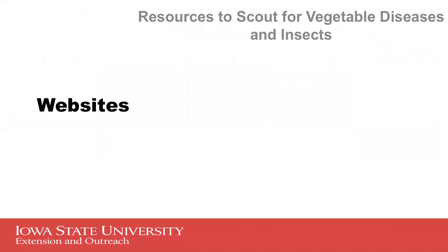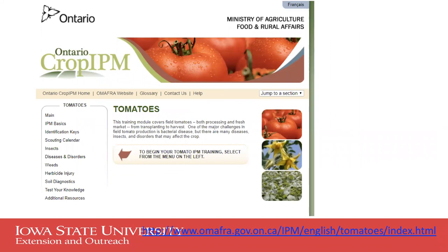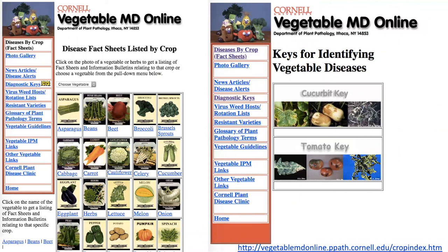When it comes to websites, my favorite is the Ontario Crop IPM site, which has a lot of great information on scouting, insects, and diseases. The scouting calendar doesn't quite apply for us — you could move the scouting a little earlier than they recommend — but the information on diseases, disorders, and insects by crop is spot on. There's also Cornell University's Vegetable MD Online, which has disease fact sheets listed by crop. It's a little older and not as responsive on a phone, but it still has great information and lots of photos you can use to learn, train employees, and train family members.